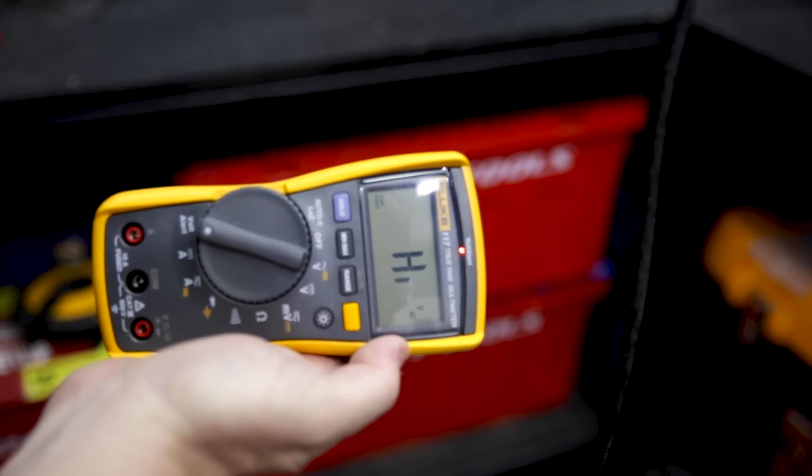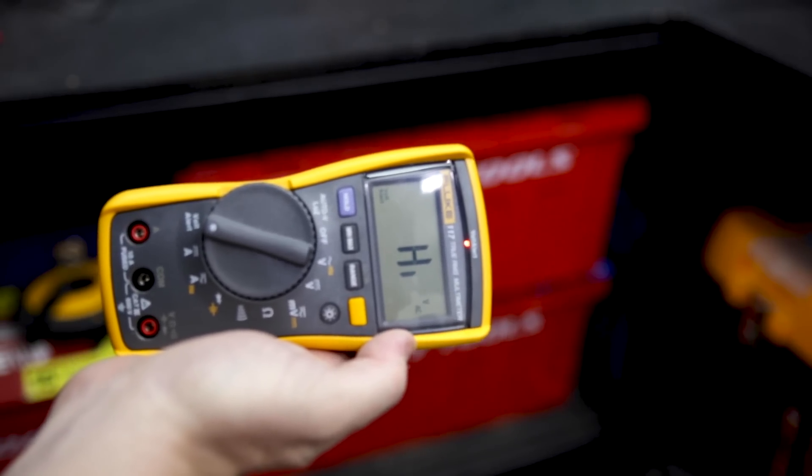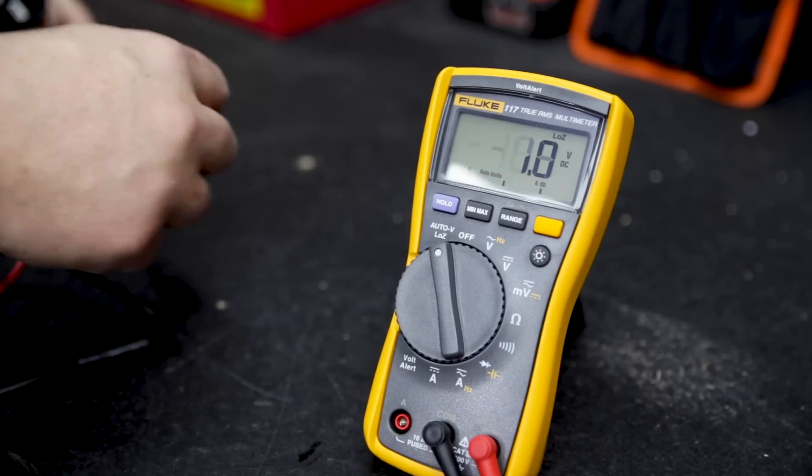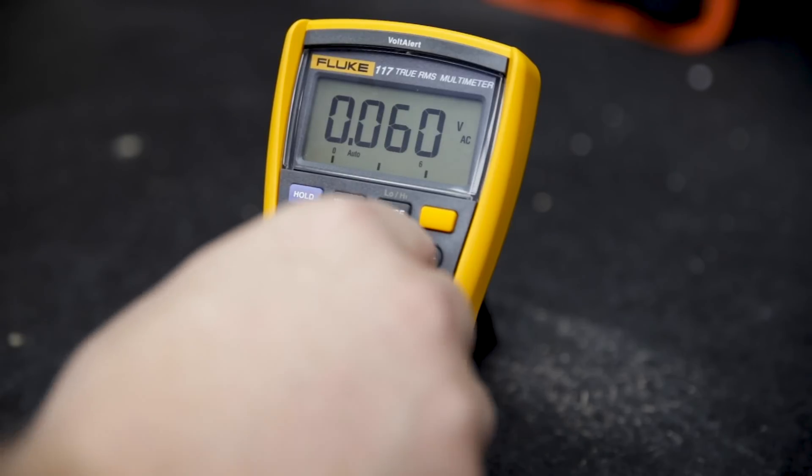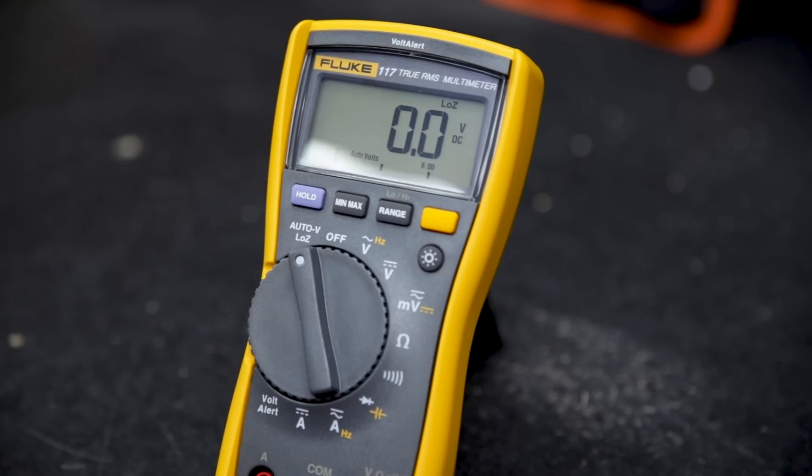Features include Fluke's Volt Alert for non-contact voltage detection above the display and Fluke's AutoVolt which is automatic AC/DC voltage selection, and you can switch it over to low impedance mode to prevent getting ghost voltage readings from nearby live conductors.